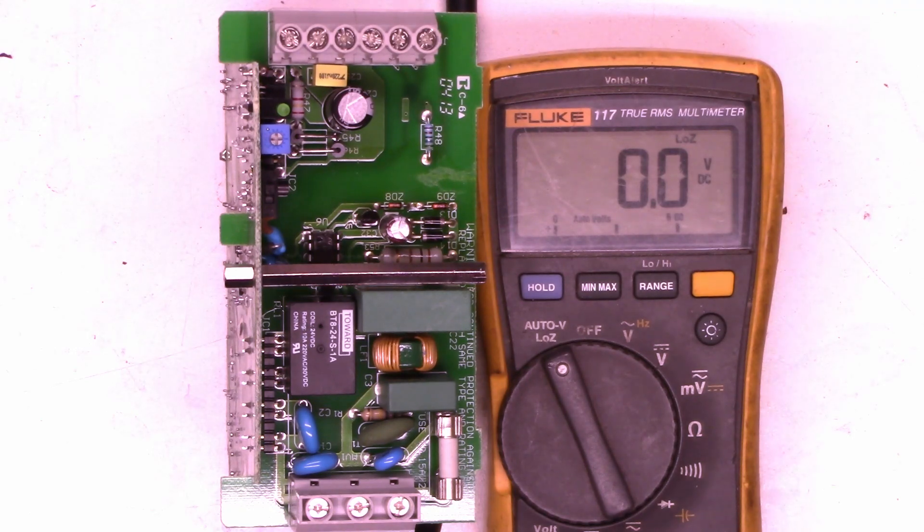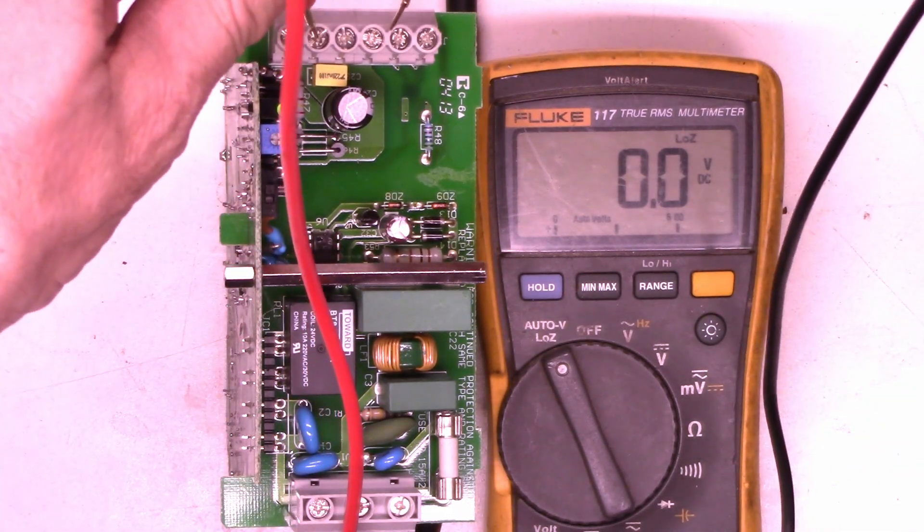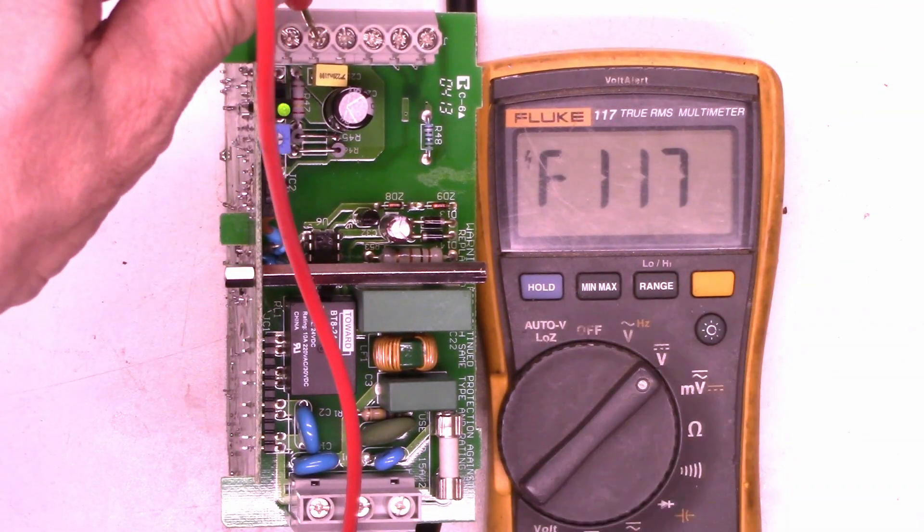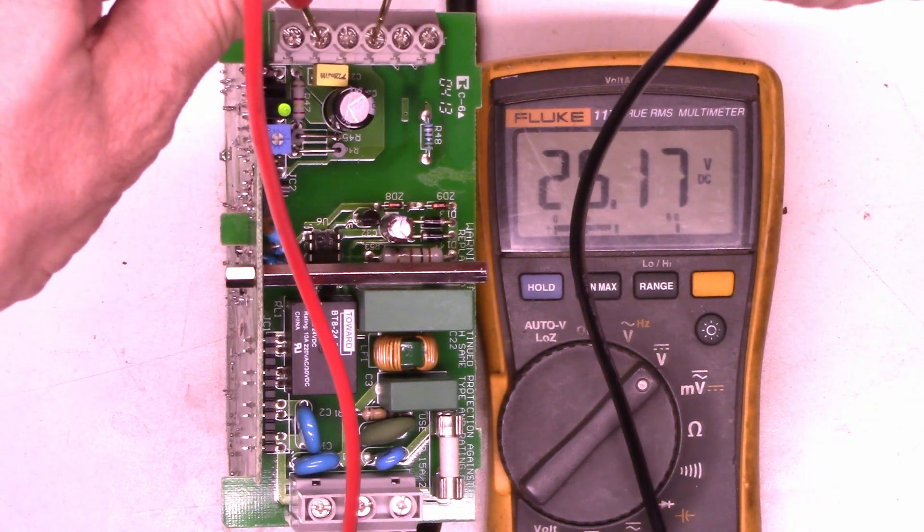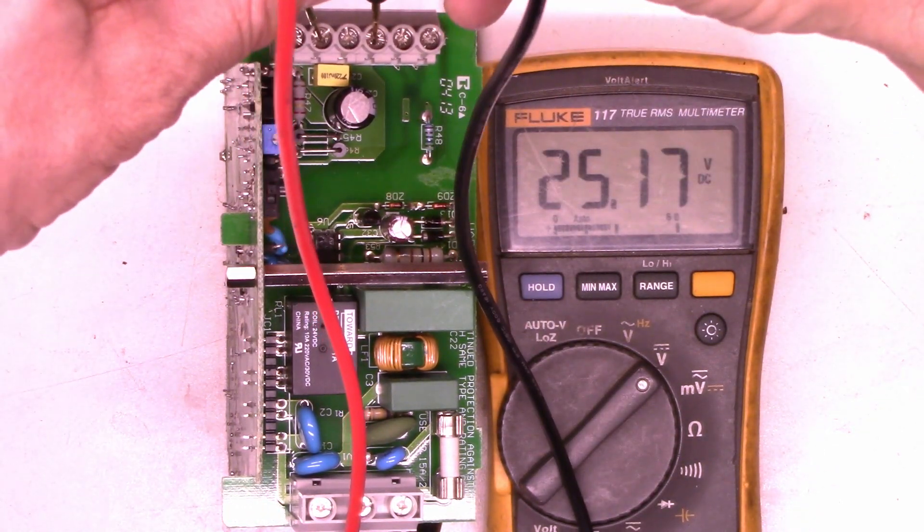Okay, so here we go. Let's apply power. I heard it chirp, and I see the green LED is lit. Let's go ahead and measure voltage on the output terminals. Let's put it in the DC volt range. 25.1 volts.